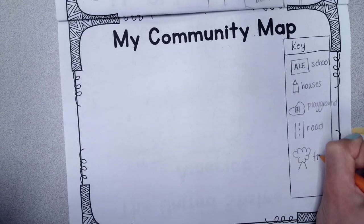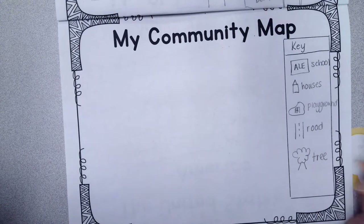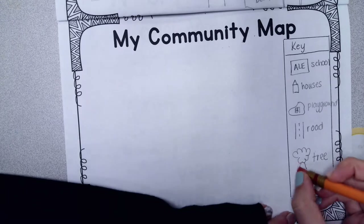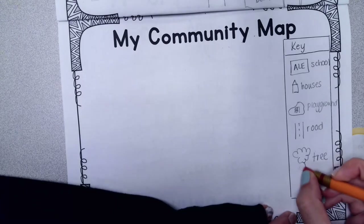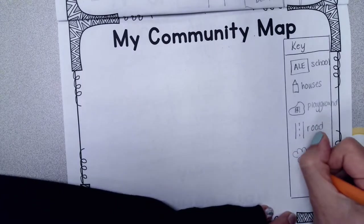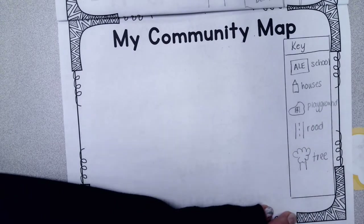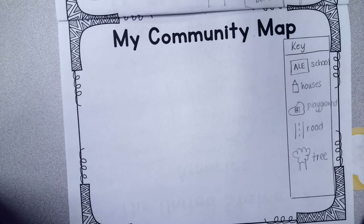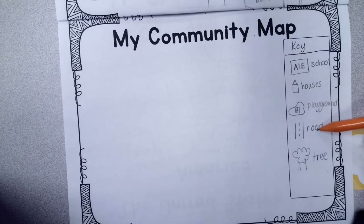We could put some trees on here — there's going to be a lot of those. I think we probably have it all then because there's schoolhouses, playgrounds, the road, and trees. So let's get started.